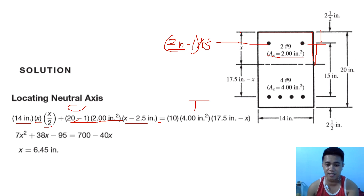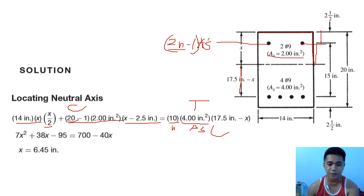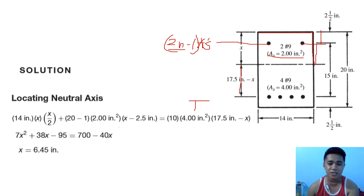For our tension side, we have n·As — where n is 10 — and the distance to the neutral axis is (17 − x). Simplifying that equation, we can get that the value of x is 6.45 inches. That is how we locate our neutral axis.